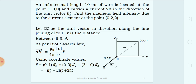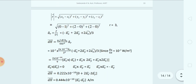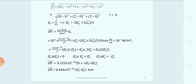Using the coordinate values, the current element is at (1, 0, 0) and point P is at (0, 2, 2). Vector R equals (0−1)â_x + (2−0)â_y + (2−0)â_z, yielding −â_x + 2â_y + 2â_z. The magnitude of vector R equals the square root of (−1)² + 2² + 2², which equals 3. Therefore, the unit vector â_R cap equals (−â_x + 2â_y + 2â_z) / 3.